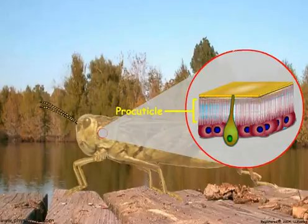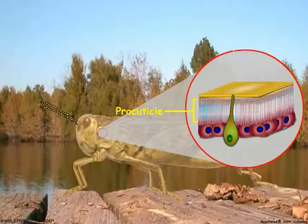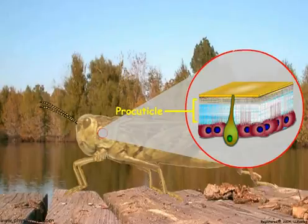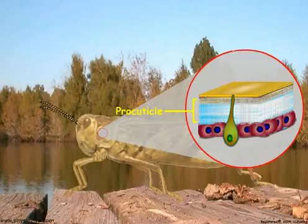Pore canals may provide an avenue for the transport of chemicals through the cuticle and probably play a role in transporting the chemicals that comprise the structural parts of the cuticle. These chemicals may diffuse laterally from the canal to form the procuticle at the time of molting. After the cuticle forms, the cytoplasmic extensions retract and the remaining channel becomes the pore canal.